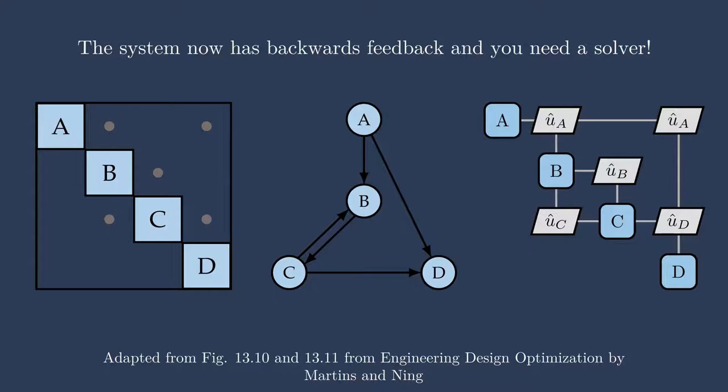And then lastly, on the right, we have the XDSM, and we see that B is passing U sub B to C, and C is passing U sub C to B. So these all show the exact same system now. It's this feedback coupled system, and we would need a solver on something like this. Now, these are all explicit components, but if we had even just one implicit component, we would also need a solver here.